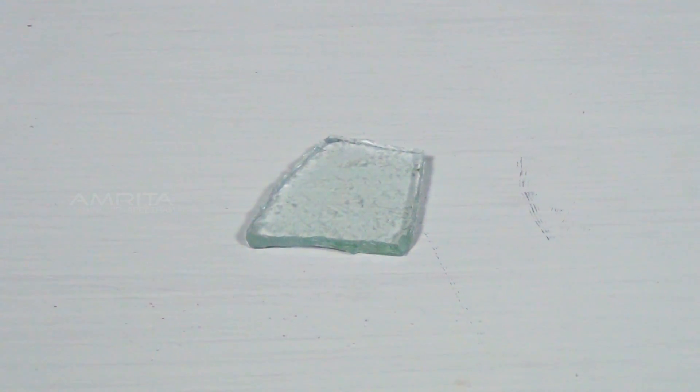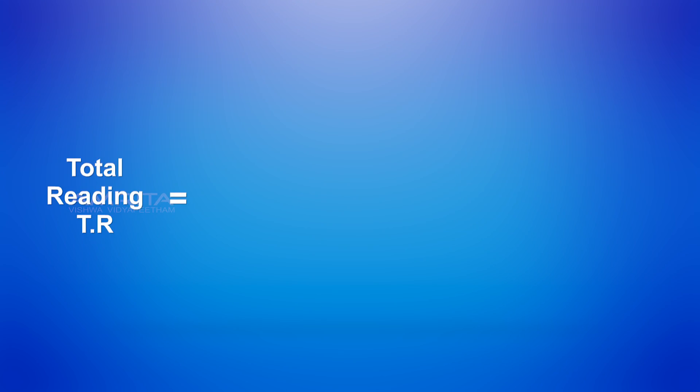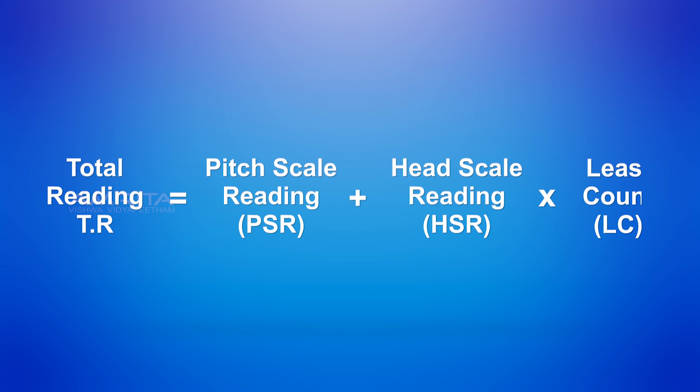Principle. Dimension of an object can be measured using the relation, total reading TR is equal to pitch scale reading PSR plus head scale reading HSR into least count LC.